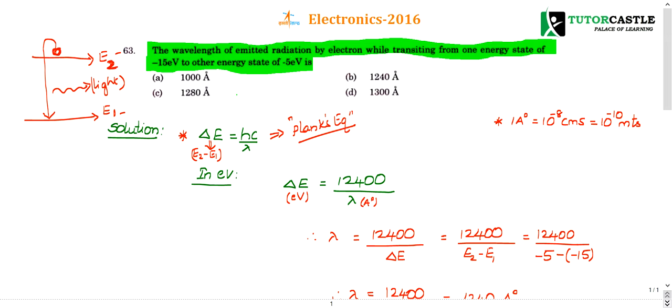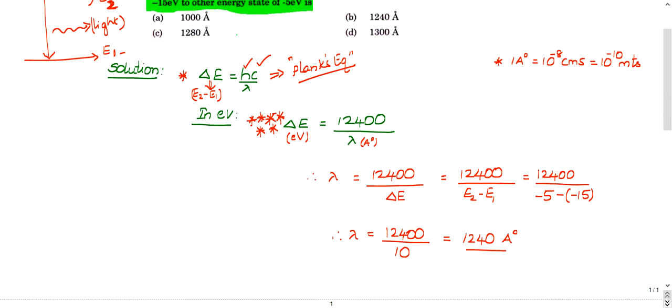To be more specific, Hc is called Planck's constant. It is a constant. It has some number and C is nothing but speed of light, 3 into 10 power 8. If you substitute this and multiply, and if you want the answer in electron volts, the energy can be in joules or electron volts. Various units are there for energy. Many people will remember this expression because it is a standard expression and many books will follow it and questions are also directly asked from this formula. The same question has been asked in ISRO 2016 also. So change in energy is nothing but 12,400 by wavelength. H and C I multiplied and got it as 12,400.